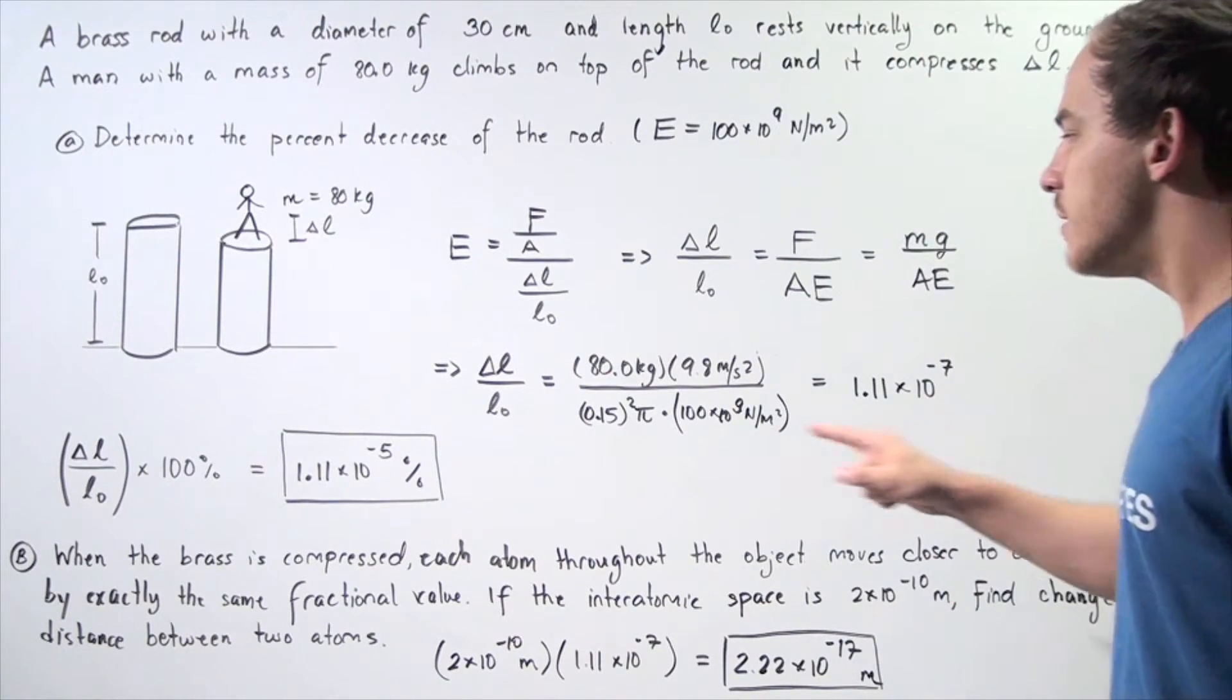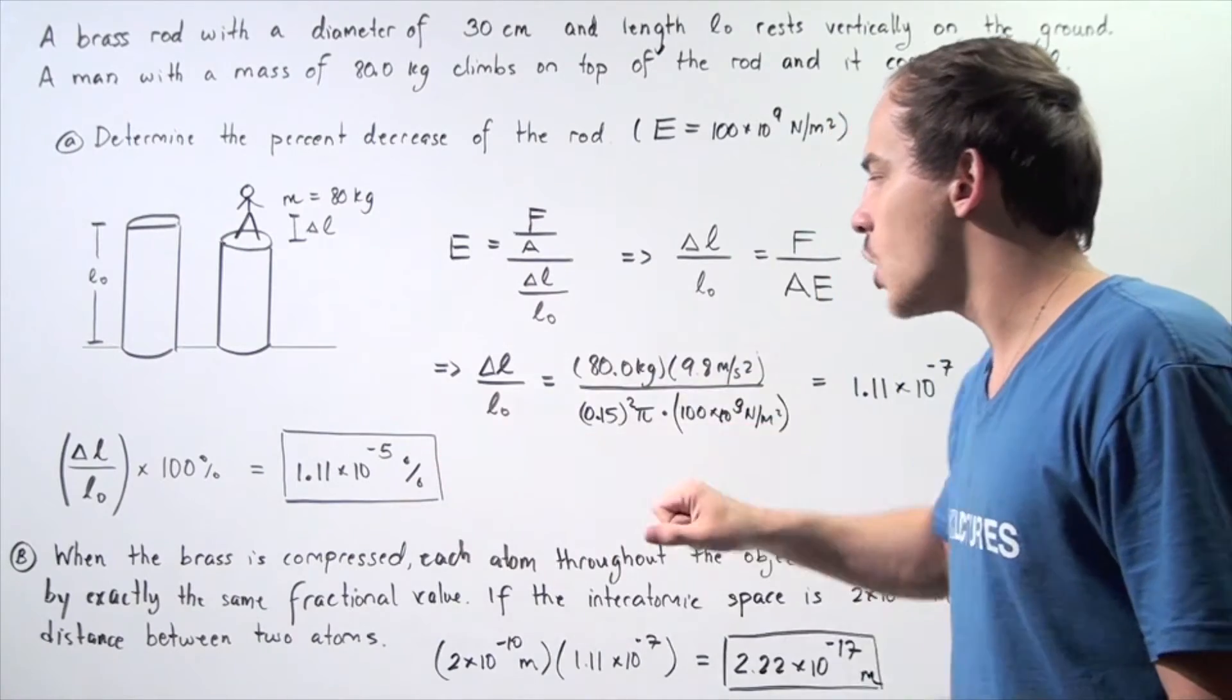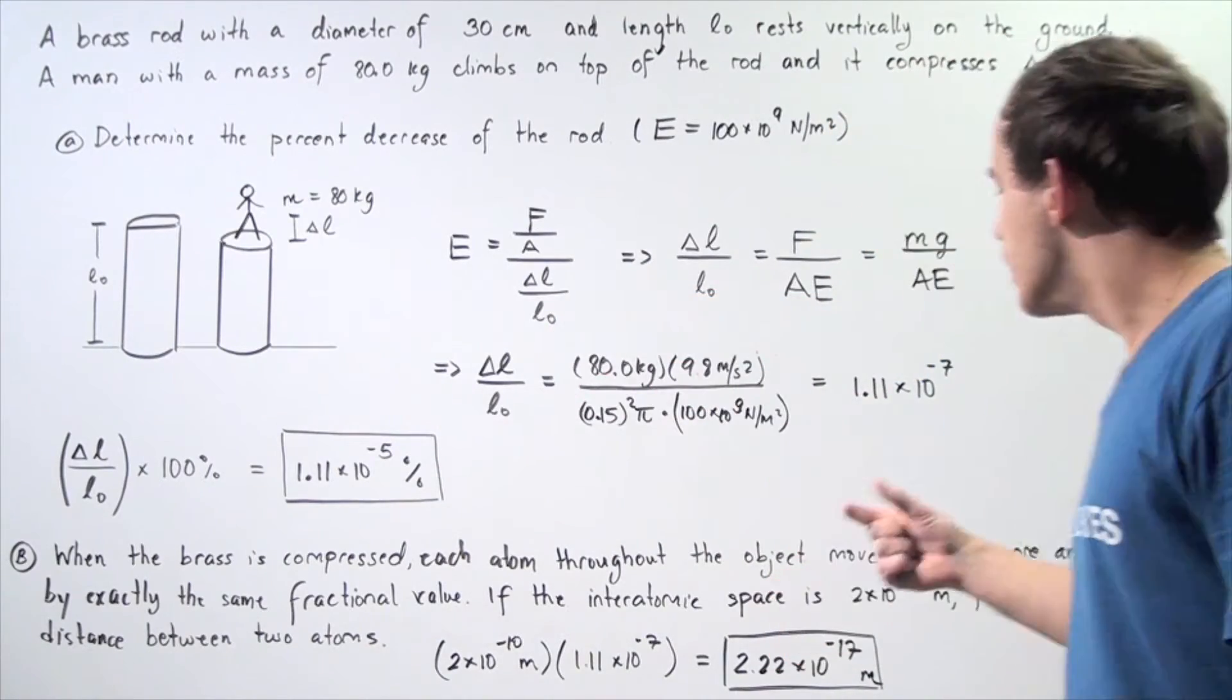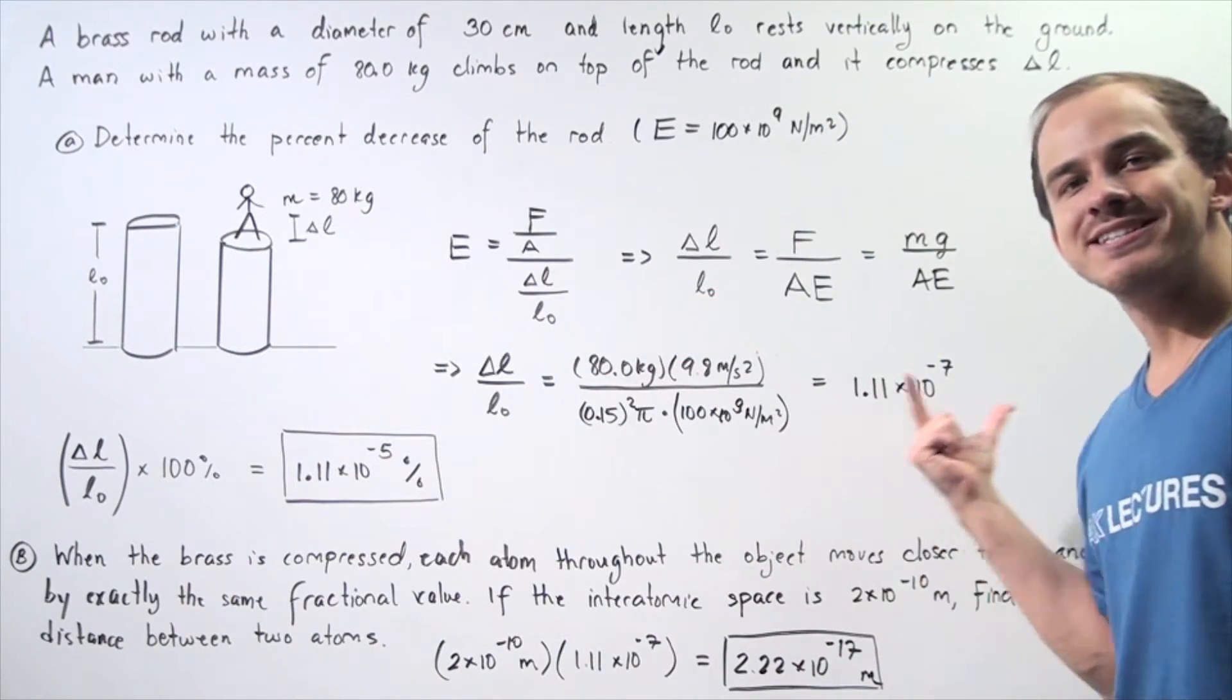So, this is unitless because this is a ratio of meters to meters. So, this is our fractional decrease,